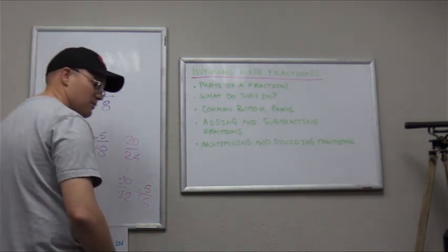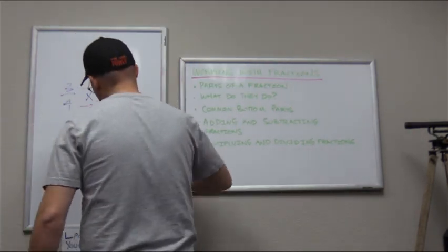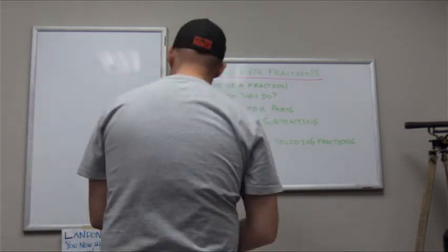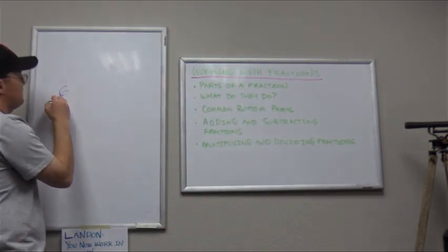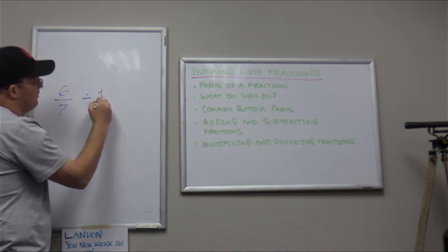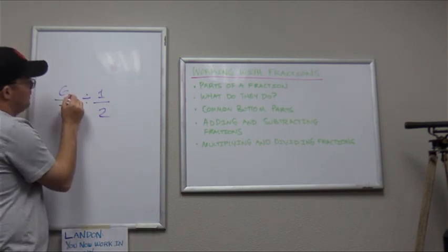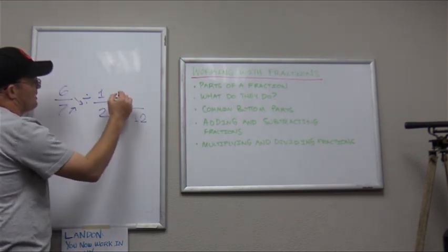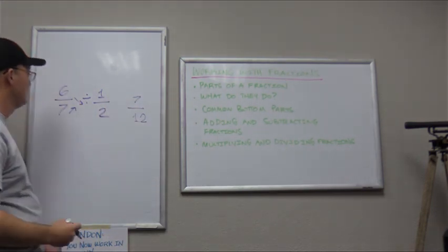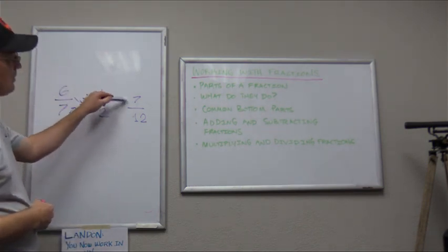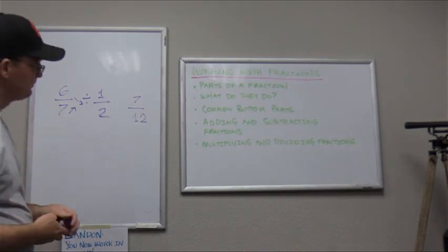Let's do one more division example: 6 sevenths divided by 1 half. Remember, top to bottom, bottom to top. 6 times 2 is 12, 7 times 1 is 7. Half of 6 sevenths is 12 sevenths. Wait — 6 sevenths divided by 1 half gives us 12 sevenths. Can't get any smaller — this is the simplest form.